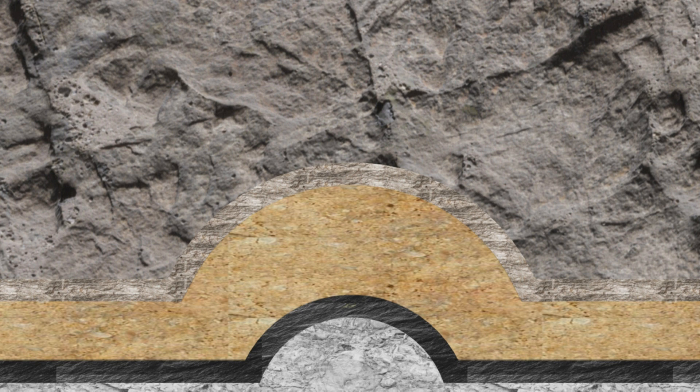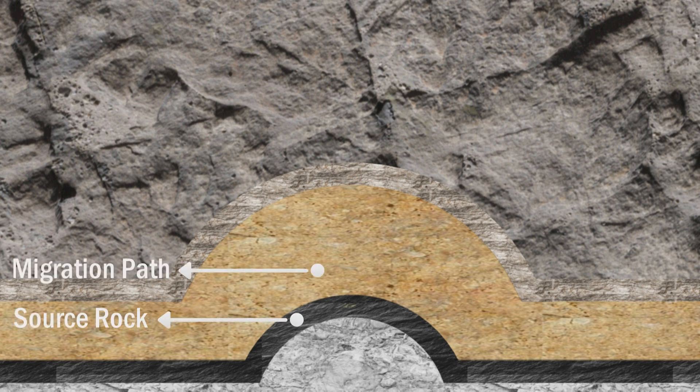For any commercial accumulation of hydrocarbon, a system of four primary components must exist. These components are source rock, migration path, reservoir rock, and trap. We will discuss each one of them briefly.